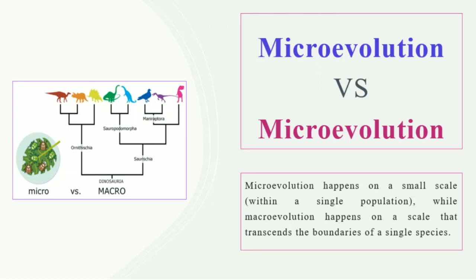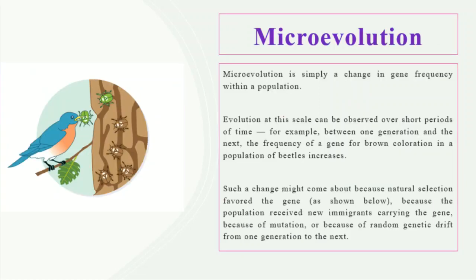Macroevolution, on the other hand, happens on a larger scale at the species level or above the species level. Microevolution is basically a change in the allelic frequency of a population or within a population. Here in this figure you can see a population of beetles, and there are two morphological forms that exist in the population.